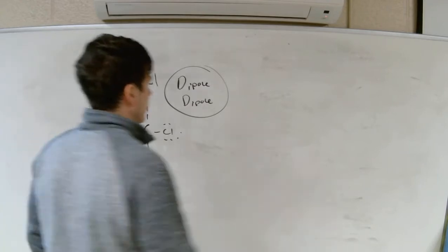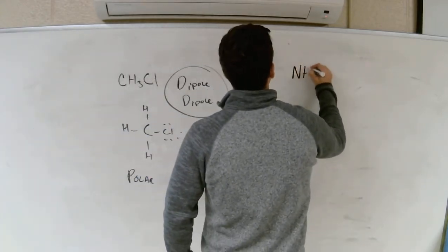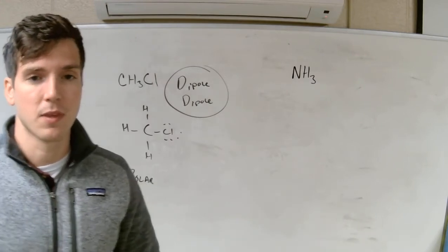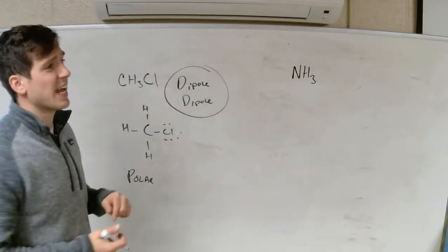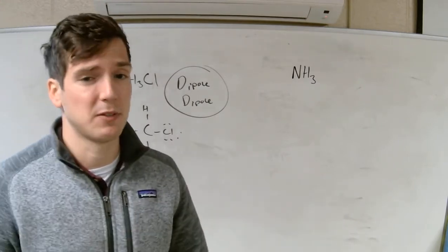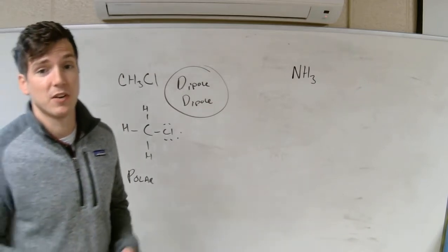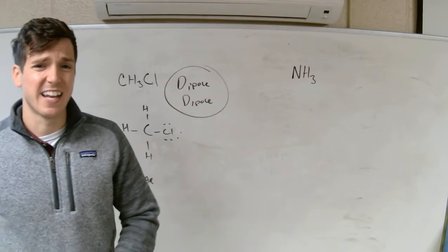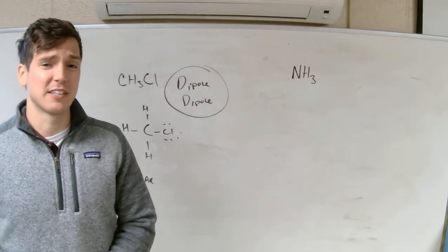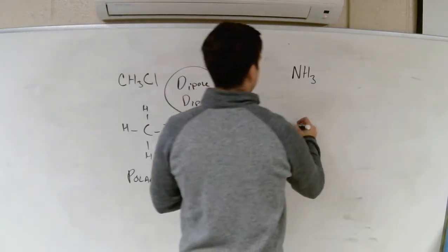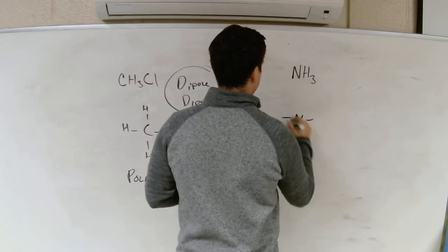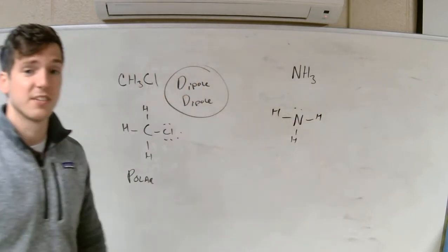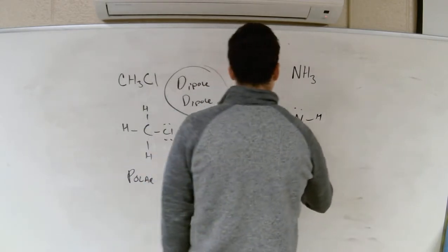Let's look at NH3. Is it ionically bonded — metal and nonmetal? No. Nitrogen is a nonmetal and hydrogen is a nonmetal. Hydrogen bonding: is this an N, O, or F bonded to an H? It is — we've got three H's bonded to an N. So this is definitely hydrogen bonding.